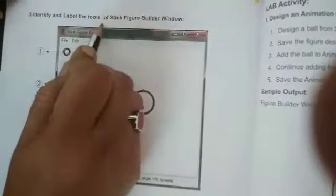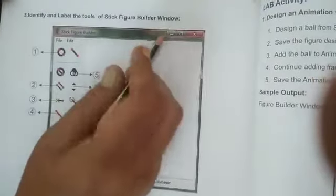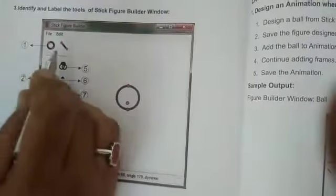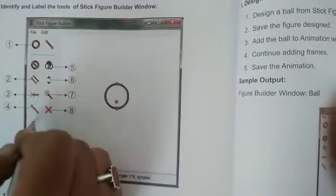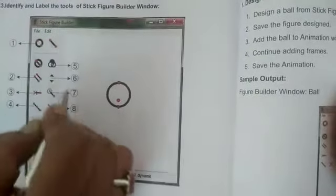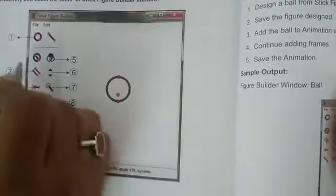Identify and label the tools of stick figure builder window. Now here they have given the stick figure builder window and they have given the tools over here. We have to name these tools. They have given the number to each and everyone, according to this number wise we have to name the tools.